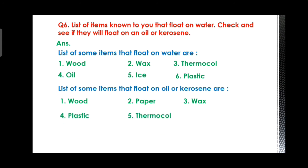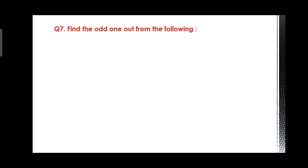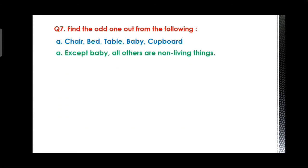Question number seven: find the odd one out from the following. First set: chair, bed, table, baby, cupboard. The odd one is baby because all others are non-living things. Second set: rose, jasmine, boat, marigold, and lotus. Boat is the odd one out because all others are flowers.